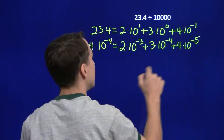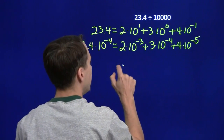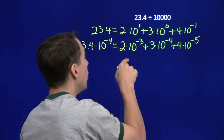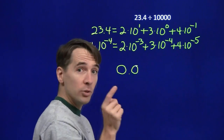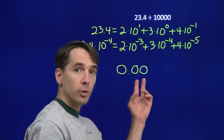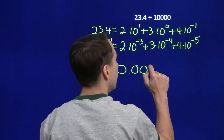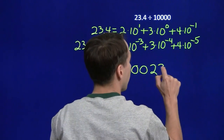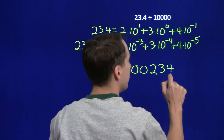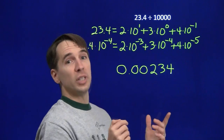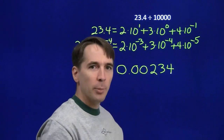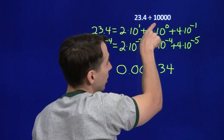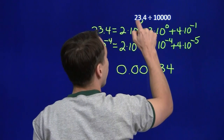Once again, we can now read the digits off our answer. We've got nothing to the left of the decimal point, so we put a zero out there. We have no ones, no tens, nothing up there, and no tenths, no hundredths — it's very important to include these zeros. We can't put the first digit right next to the decimal point because the first digit isn't in the tenths place; it's way out in the thousandths place. And we've got a 3 in the ten-thousandths place and a 4 in the hundred-thousandths place: 2 in the thousandths, 3 in the ten-thousandths, 4 in the hundred-thousandths.